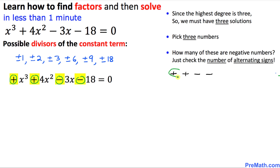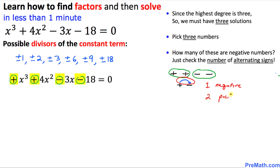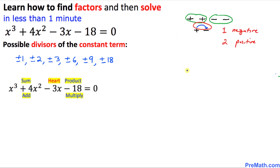If the signs repeat themselves, just write them once. So writing each sign once gives us positive then negative — that is one change, one fluctuation. Since there is only one fluctuation, we are going to have only one negative number, meaning two of those numbers will be positive.